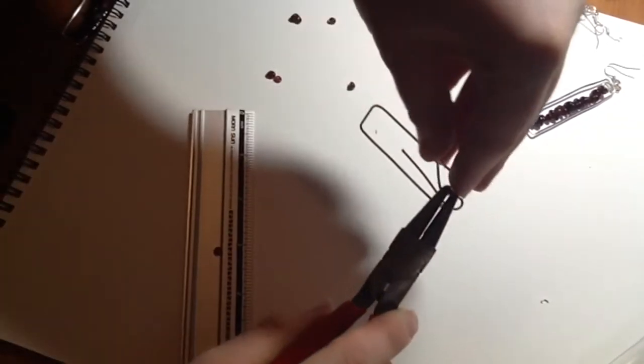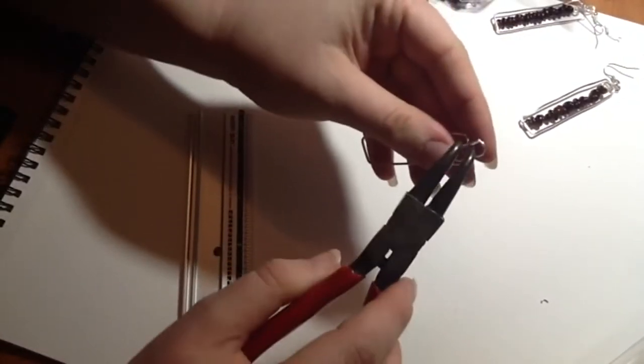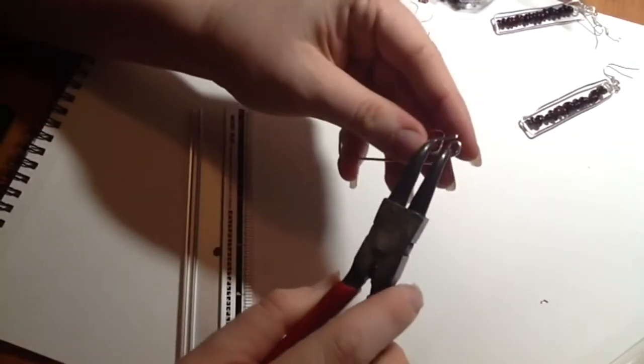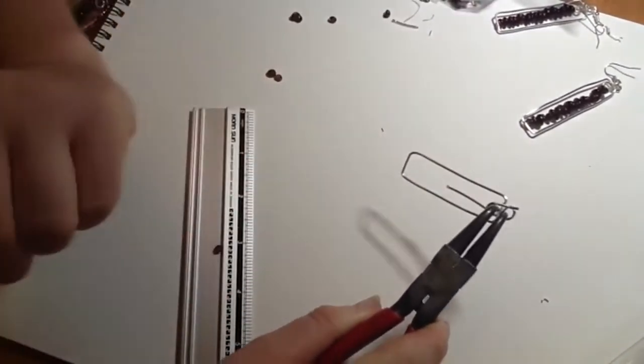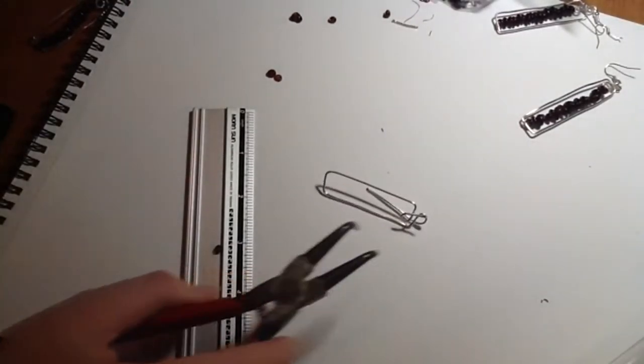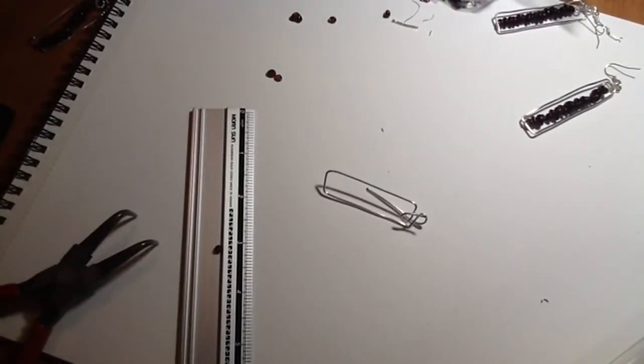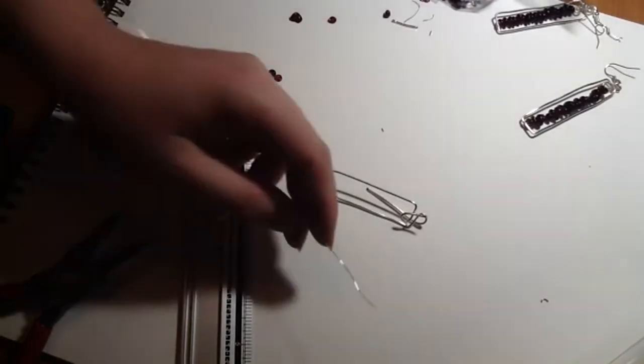So I'm just going to pull my wire around the round section of my pliers. Okay, now I want these two to sort of fit together, so what I'm going to use to do that is some 26 gauge wire.